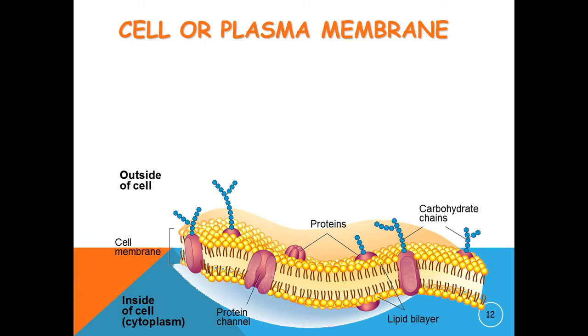To start with: cell membrane or plasma membrane. It is composed of a double layer of phospholipids and proteins surrounding the outside of all cells. The membrane controls what enters or leaves the cell. It is a living layer of a cell.